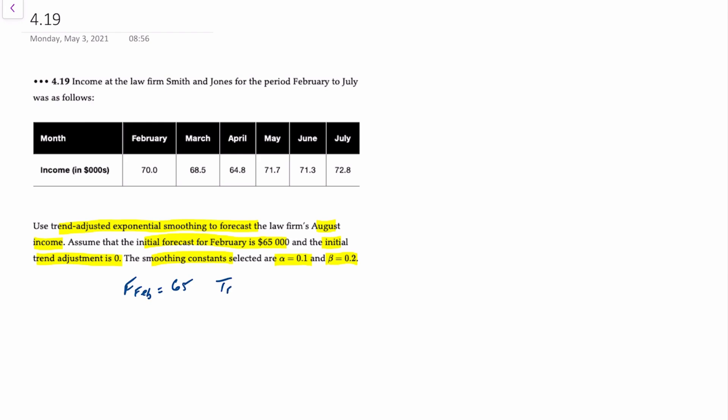In terms of the data we have, the forecast for February is 65, we'll just do this in thousands, and the trend for February is zero. Now, a trend-adjusted forecast, or FIT, for any particular period, is equal to the forecast for that period plus the trend for that period. So where FIT is the trend-adjusted forecast, F is the forecast, and T is the trend.